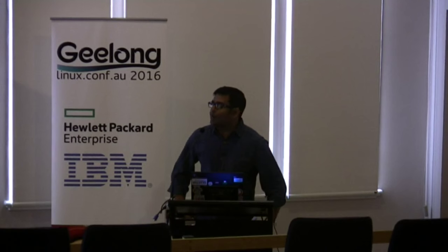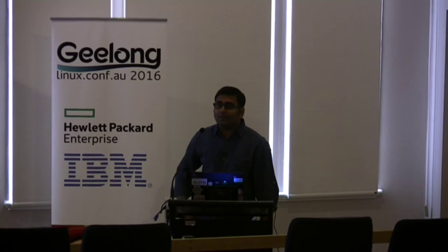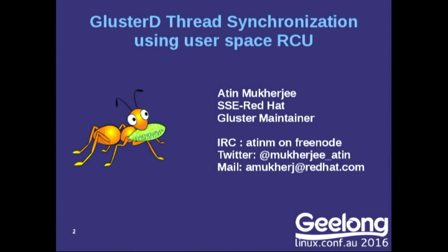My name is Atin. I work as a senior software engineer at Red Hat. I work in a project called Gluster, which is an open source scalable file system. At Red Hat, we actually productize it with the name of Red Hat Gluster Storage. I also maintain Gluster code in upstream. Today I'm going to talk about how we maintain or improve the thread synchronization part of GlusterD, and with the help of user space RCU, how we improve the synchronization part.